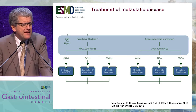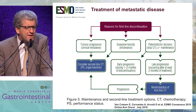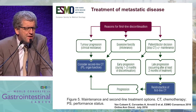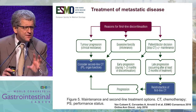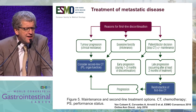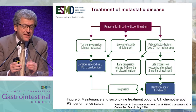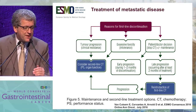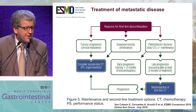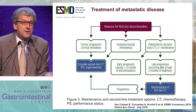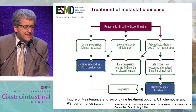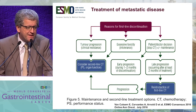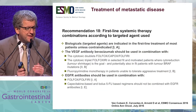When a patient is treated in first line, there are different reasons for discontinuation. The algorithm covers maintenance treatment for some patients, and reintroduction if there is late progression. For patients who discontinue due to tumor progression or excessive toxicity, second-line chemotherapy should be considered.